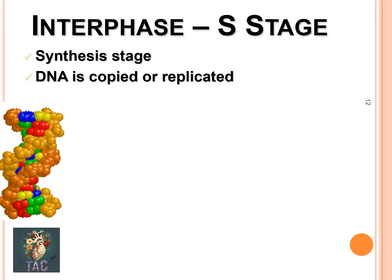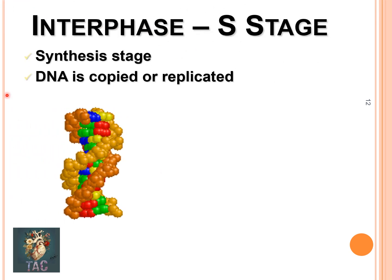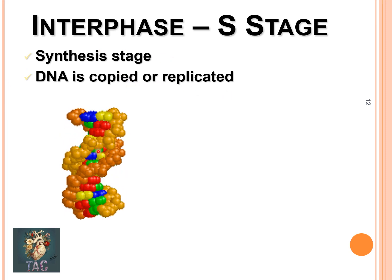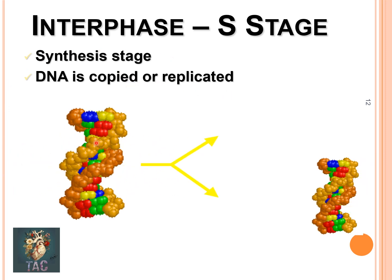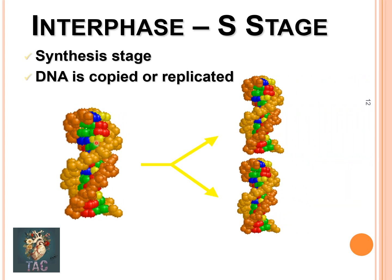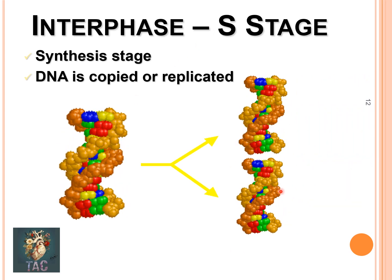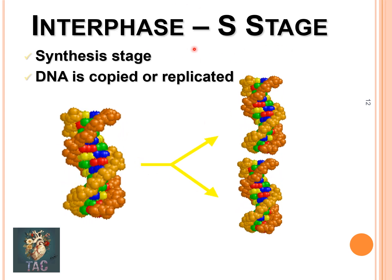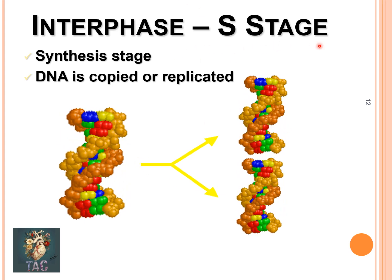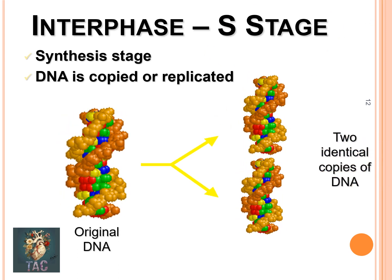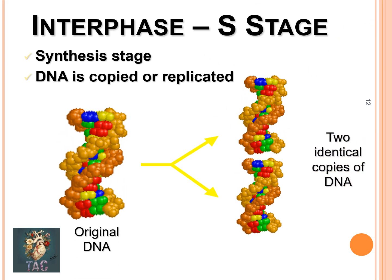In the synthesis phase, the DNA is copied or replicated. The original DNA now consists of two identical copies. You can see in interphase during the synthesis phase that two identical copies are formed from the original DNA.